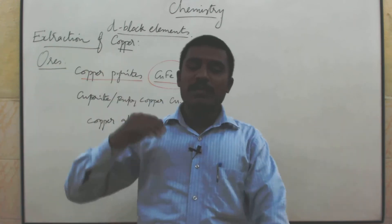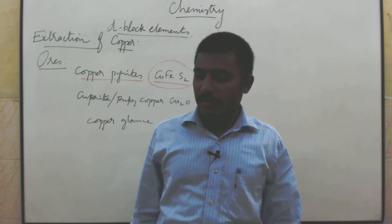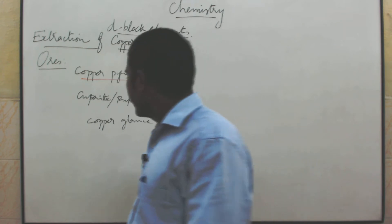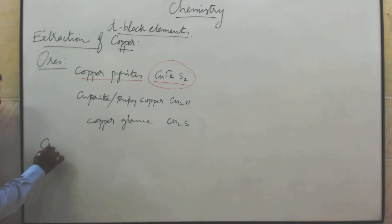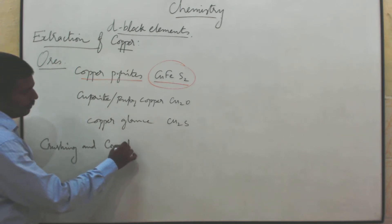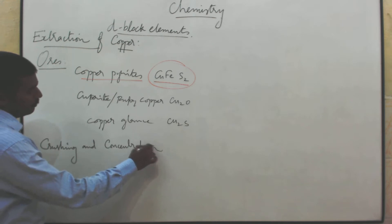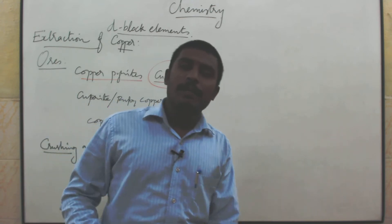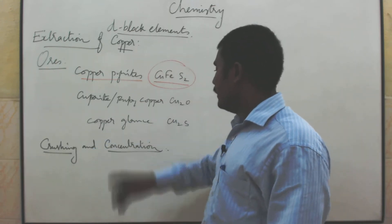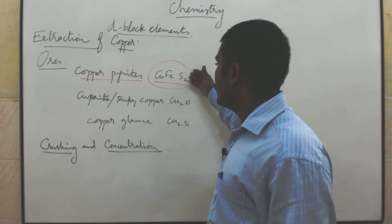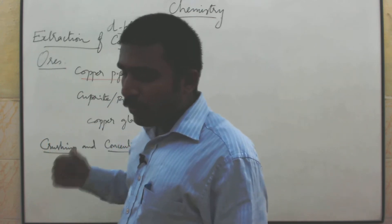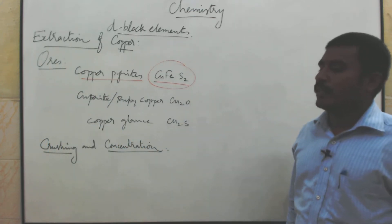Since it is a sulphide ore, which method is suitable to concentrate? Froth flotation method. The next step is crushing and concentration. The ore is crushed, powdered, and concentrated by the froth flotation process because the ore is a sulphide ore.